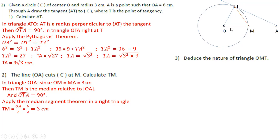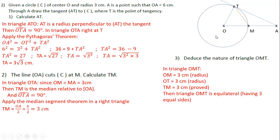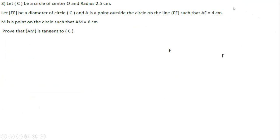Part 3: deduce the nature of triangle OMT. We know OT is a radius = 3 cm, OM is a radius = 3 cm, and we proved TM = 3 cm. Since all three sides are equal, triangle OMT is an equilateral triangle.